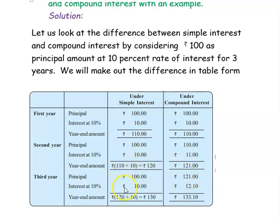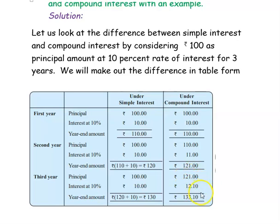For the third year, in simple interest, the principal is again Rs. 100. The previous year amount was Rs. 120 and you add the interest of Rs. 10, so your final amount will be Rs. 130 at the end of the third year. For compound interest, you are taking the principal to be Rs. 121 at the start of the third year, and finding 10% interest for Rs. 121, giving Rs. 12.10. So if you add this, you will get Rs. 133.10 at the end of the third year.